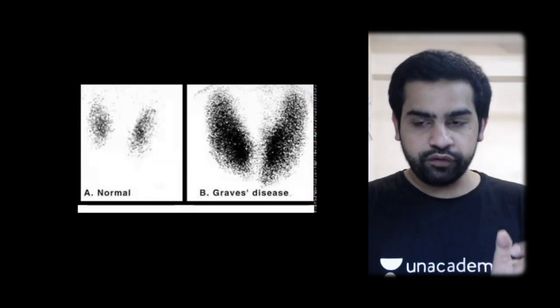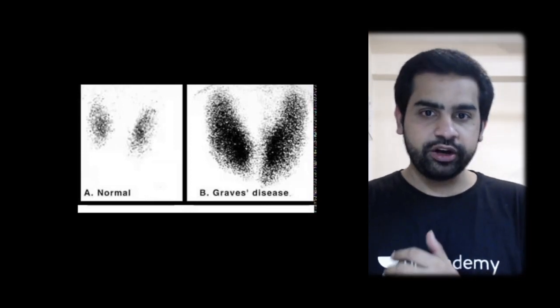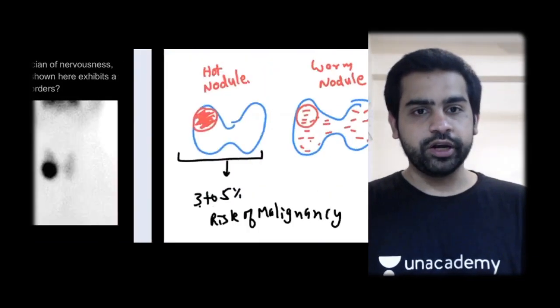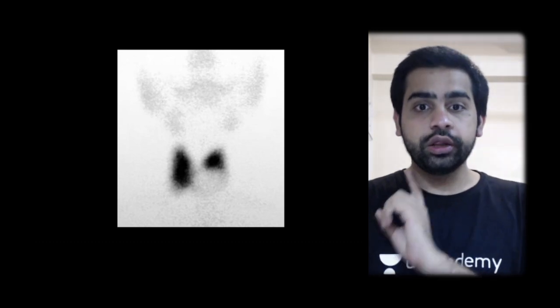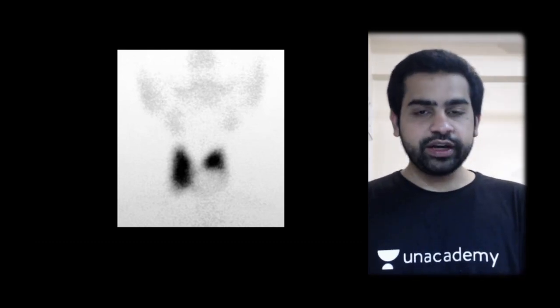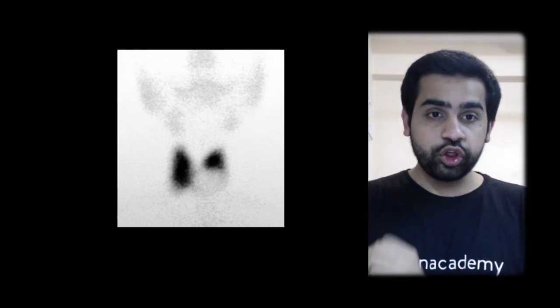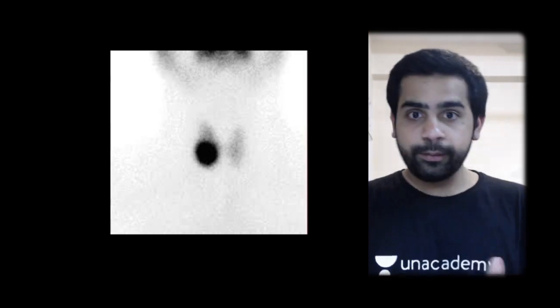In this figure, what you see is a cold nodule — most of the thyroid gland has taken up radioactive iodine, but there is a lesion with reduced uptake compared to the rest of the gland. Do not mix these up: cold nodule = reduced uptake, hot nodule = increased uptake in one area, Graves disease = diffusely increased uptake in the whole gland. These are important images.